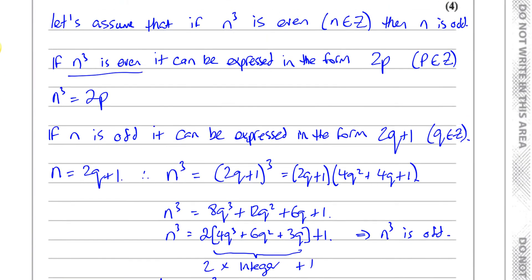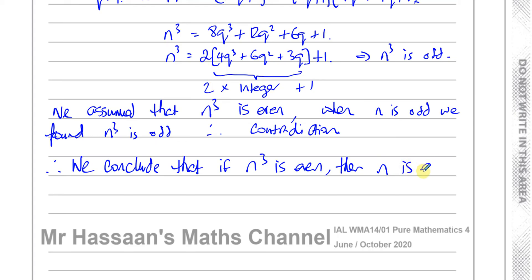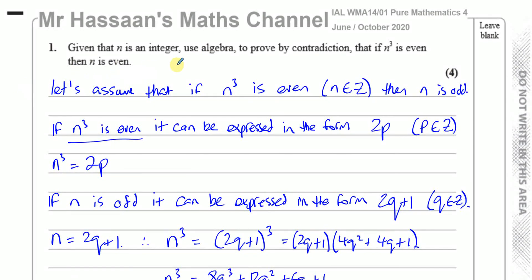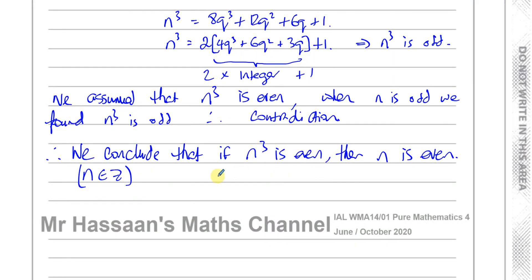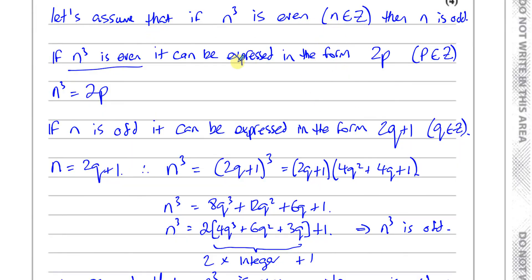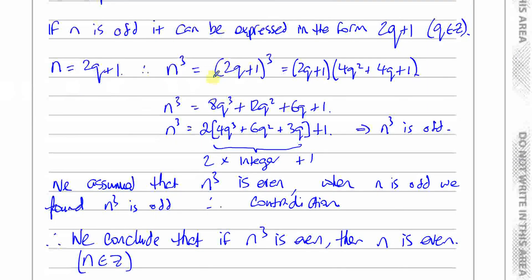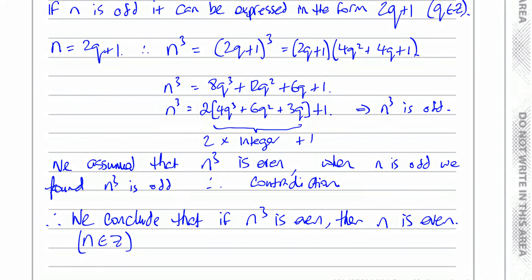It came out as odd but it's supposed to be even — that's the contradiction. We must always write our conclusion: we conclude that if n cubed is even, then n is also even, where n is an integer. That's the proof by contradiction method: assume the opposite, use it in your calculation, find a contradiction, and this proves the original statement is actually true.